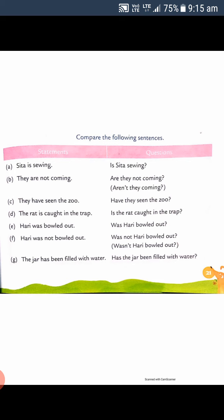We can also write the short form: 'Aren't they coming?' — both are the same. 'They have seen the zoo' becomes 'Have they seen the zoo?' — put question mark. 'The rat is caught in the trap' becomes 'Is the rat caught in the trap?' — put question mark. 'Harry was bowled out' becomes 'Was Harry bowled out?' — question mark.